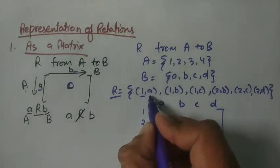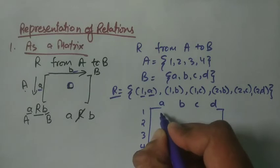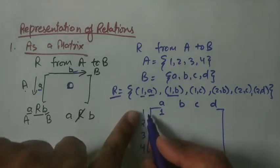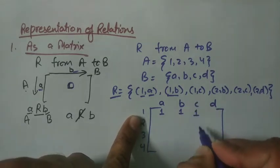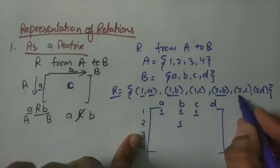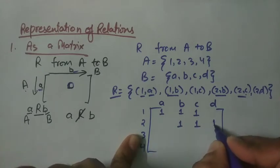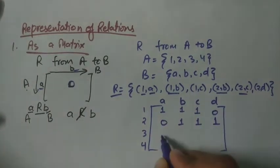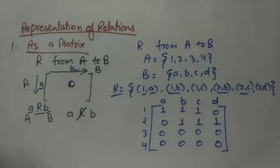In relation R, 1 is related to A, so in row 1 and column A we write 1. Similarly for (1,B) we mark 1, and for (1,C) we mark 1. For (2,B) in row 2 and column B we mark 1; for (2,C) in row 2 and column C we mark 1; and for (2,D) in row 2 and column D we mark 1. The rest of the entries will be 0. In this way we can represent a relation by a matrix.